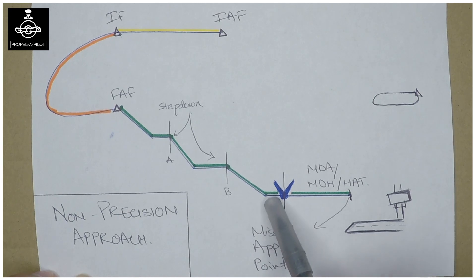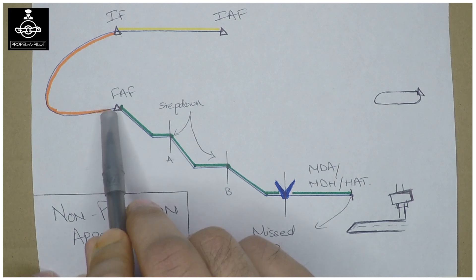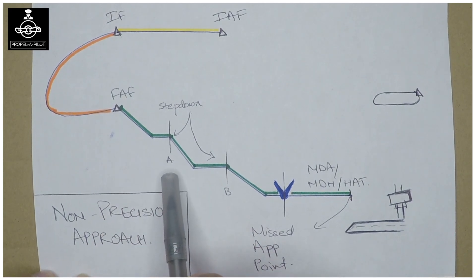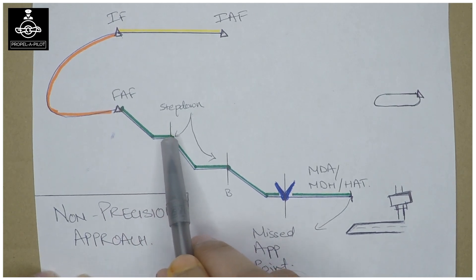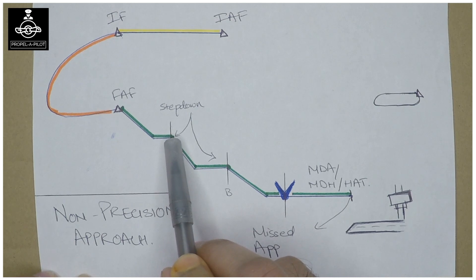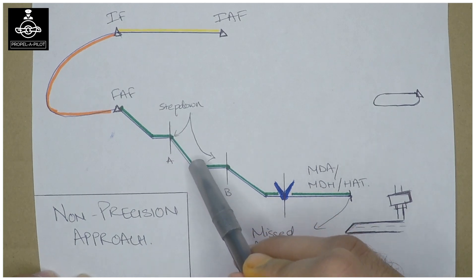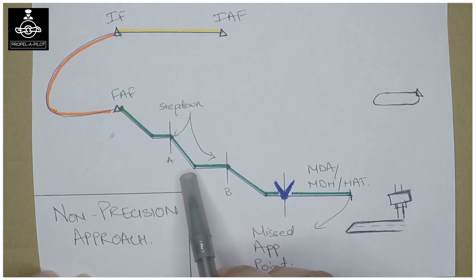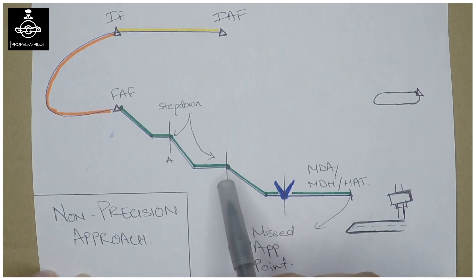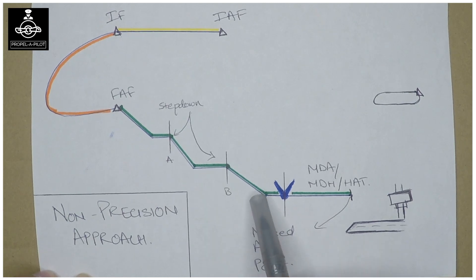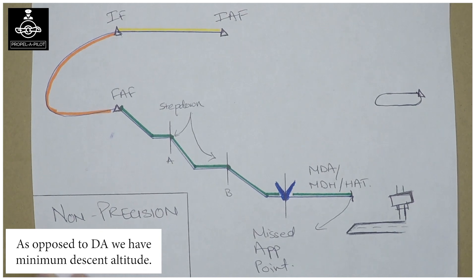You have minimum altitudes to descend to at certain fixes before you can continue descending. Take this as an example: let's say the final approach fix was at 2000 feet, step-down fix A is at 1600 feet, so you start descending, reach 1600, level off until you pass fix A. Then step-down fix B is at 800 feet, so you start descending, reach 800 feet — if you reach 800 feet before fix B, you level off and maintain 800 feet until you reach fix B. Then you continue down to the minimum descent altitude.